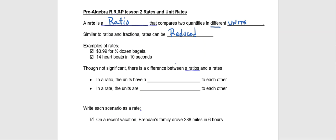Though it's not significant, the primary difference between ratios and rates is, we'll say it one more time, in a ratio the units have a relationship to each other. And in unit rates, the units are unrelated to each other.